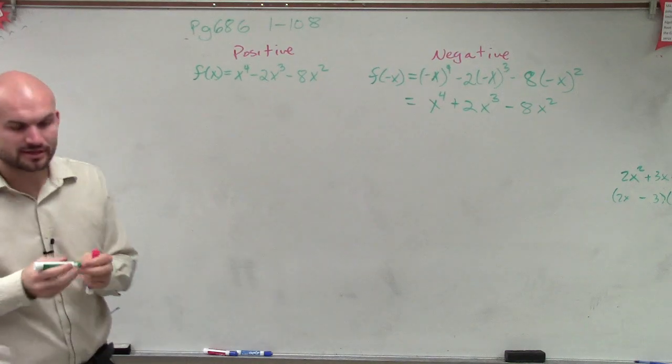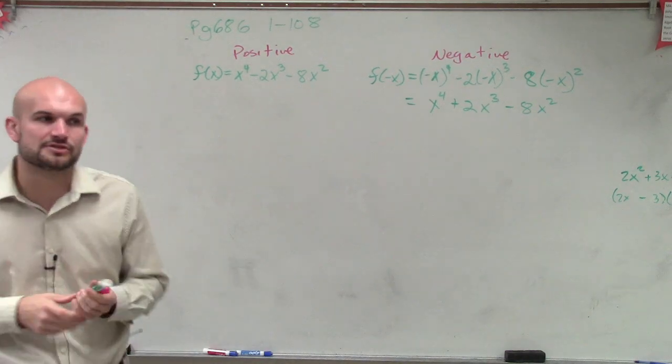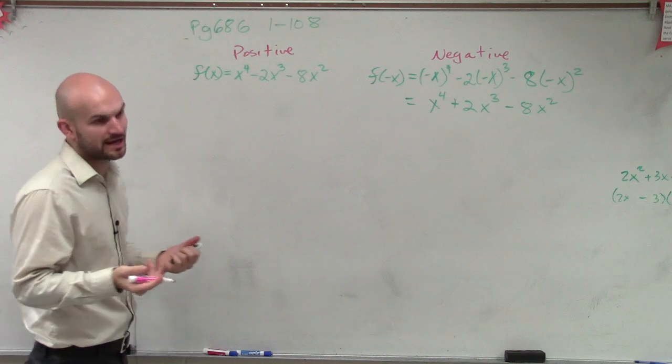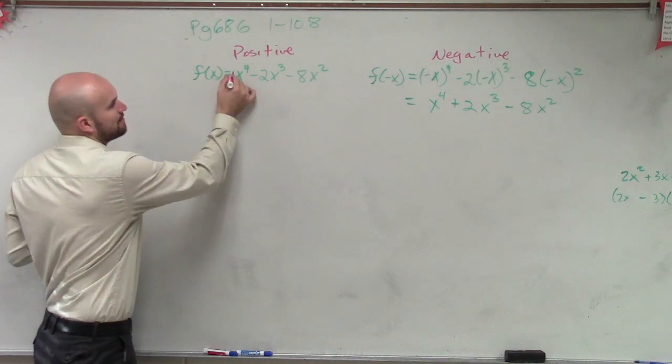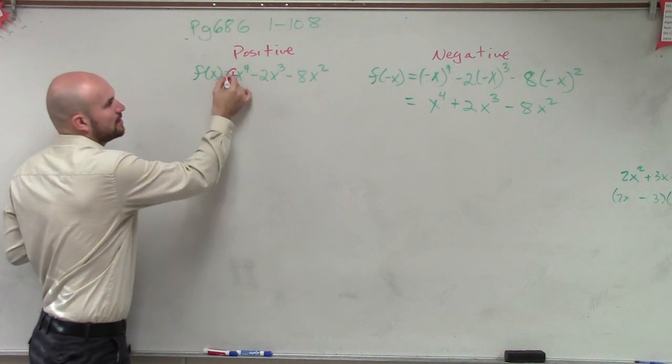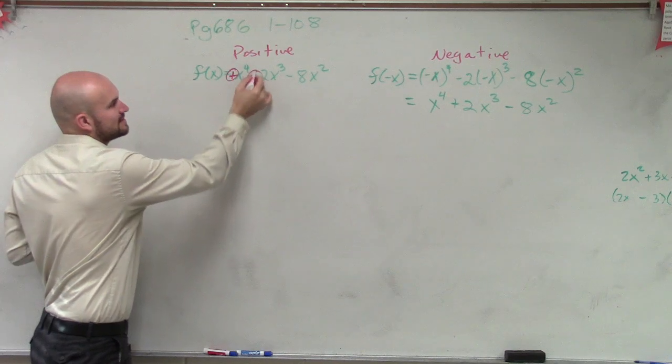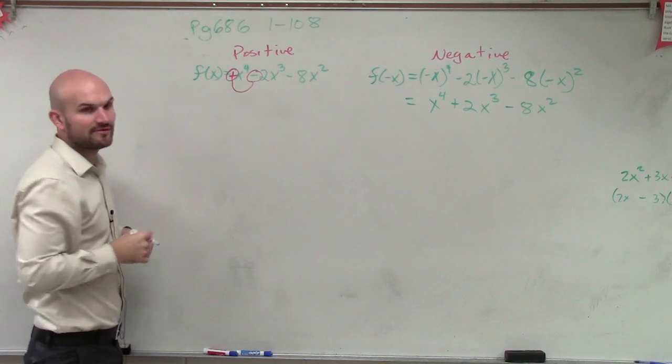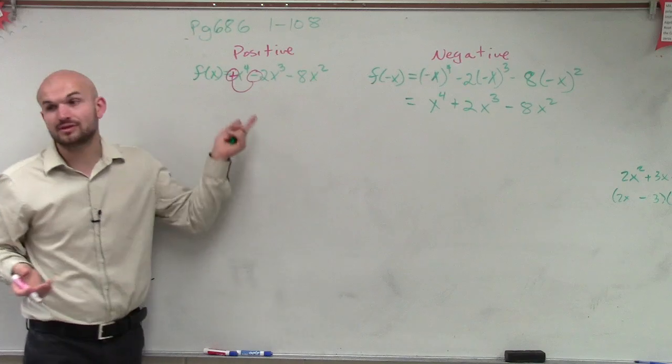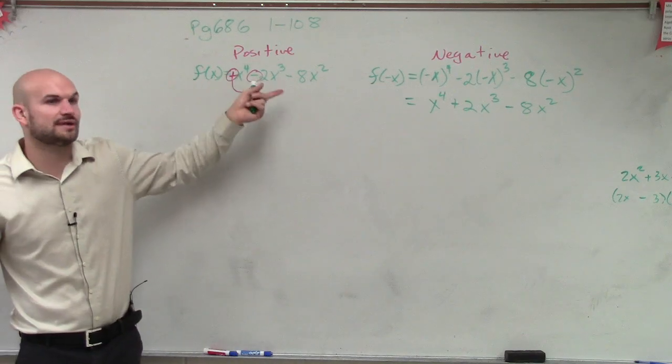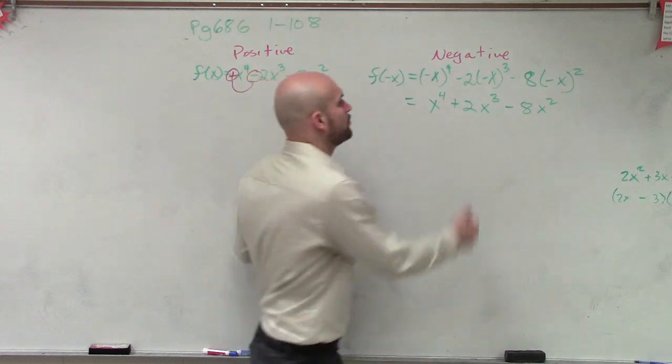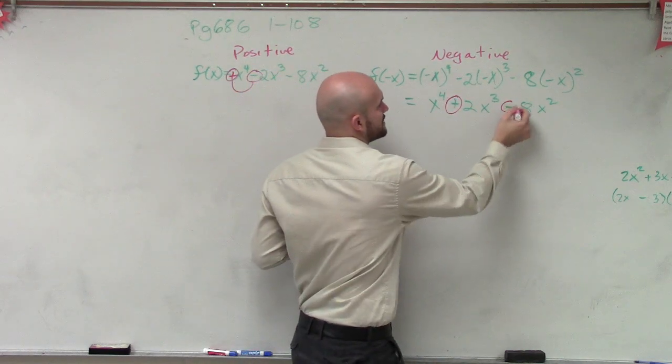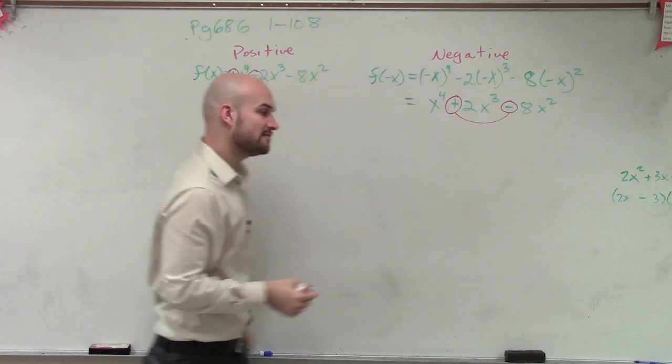So now what we want to do is look at the variations of the sign to determine how many zeros, positive or negative, we're going to have. Well, since this is a positive x to the fourth, we know I have to go from positive to negative, which is one variation. And that's it. That's the only time it varies from a positive to a negative or a negative to a positive. Over here, we only have one variation when it goes from a positive to a negative.